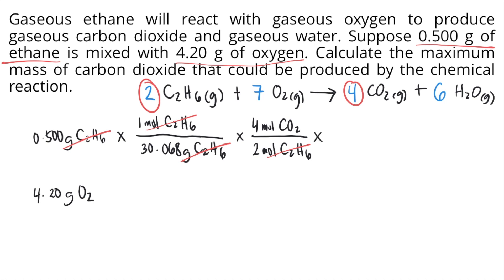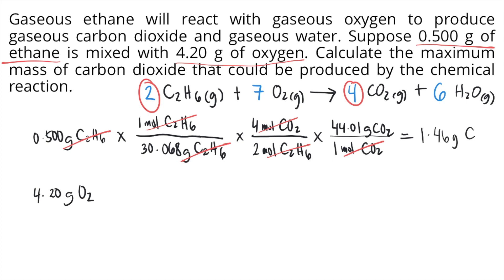Finally, we need to convert moles of carbon dioxide into grams using the molar mass of carbon dioxide, which is 44.01 grams per mole. Place one mole of CO2 below and 44.01 grams on top so the moles of carbon dioxide cancel. Solving this on a calculator, we get 1.46 grams of carbon dioxide from the first reactant.